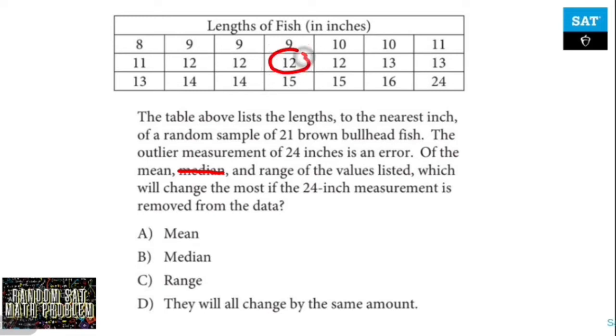The mean will change, but if you're thinking all of a sudden I have this big fish amongst 20 other fish, the mean will go down if I remove 24 slightly. So the mean will change, but we're talking about a difference of 8 inches here - 8 inches over 21. You're talking about the mean changing less than an inch.